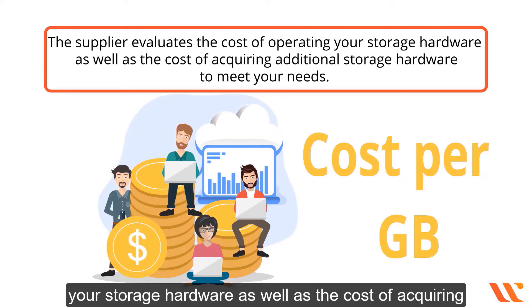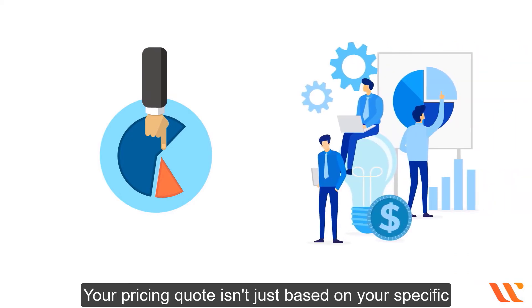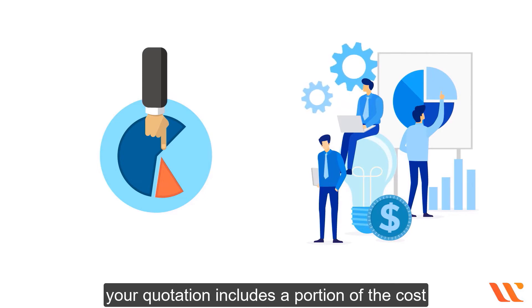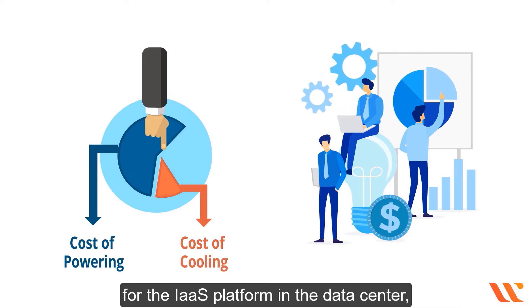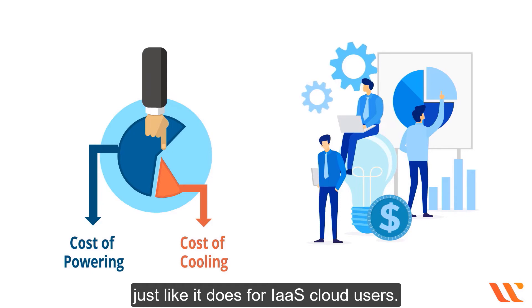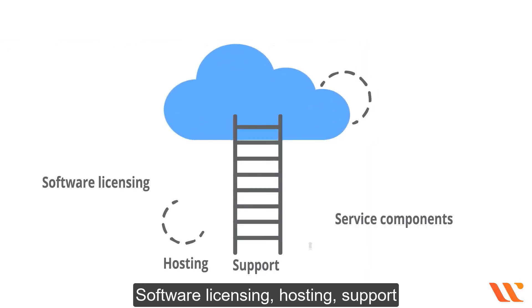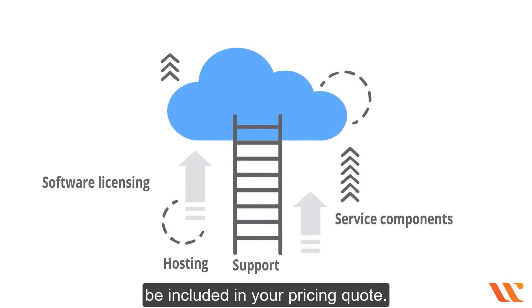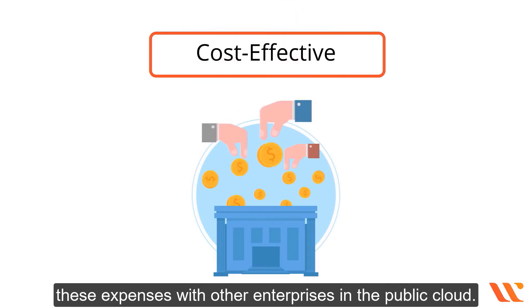For storage, the supplier evaluates the cost of operating storage hardware as well as acquiring additional storage hardware to meet your needs. Your pricing quote also includes a portion of the cost of powering and cooling the underlying infrastructure in the data center. Software licensing, hosting support, and other service components may be included in your pricing. IaaS is cost-effective because it shares these expenses across other enterprises in the public cloud.